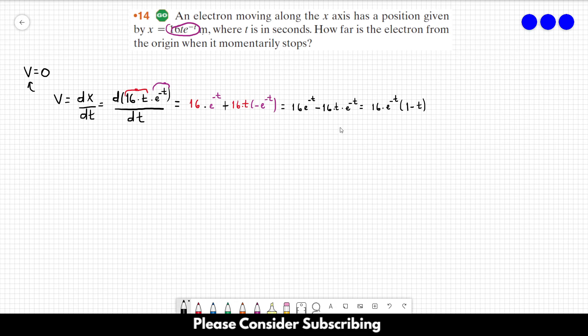And we can realize by just looking at it that the velocity would be zero when this term is zero. And how does it happen? It happens when the time t equals to 1 second. So we know that the electron will stop when the time is 1 second.